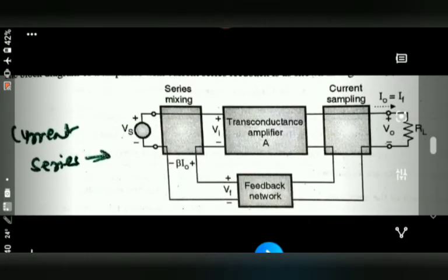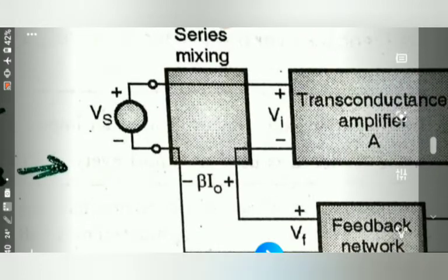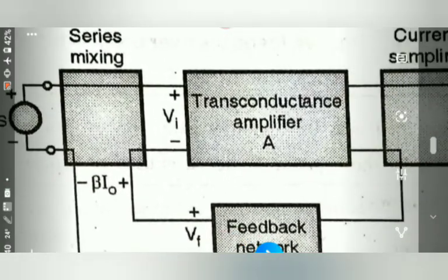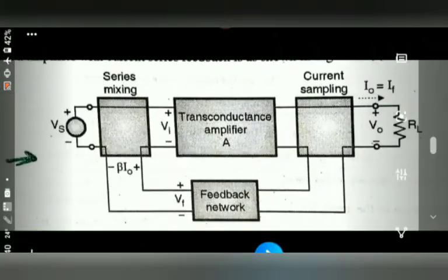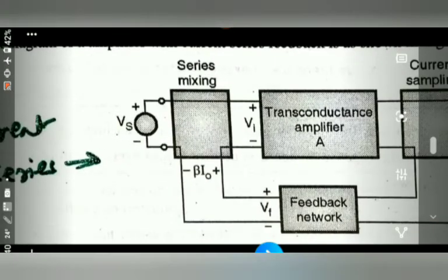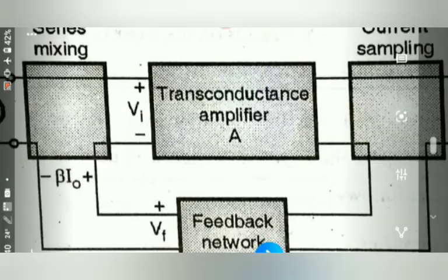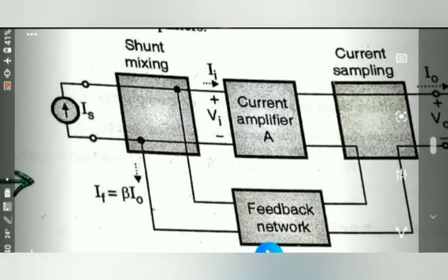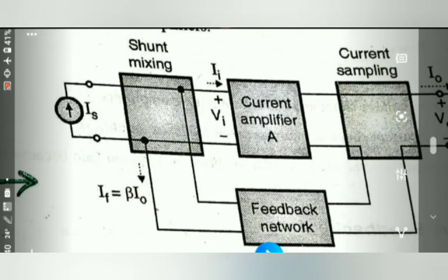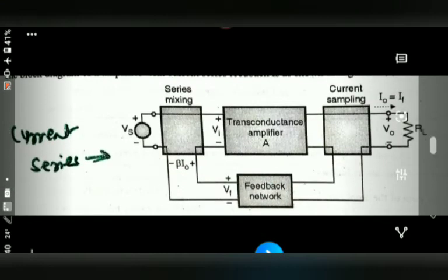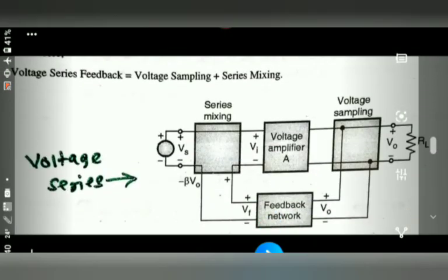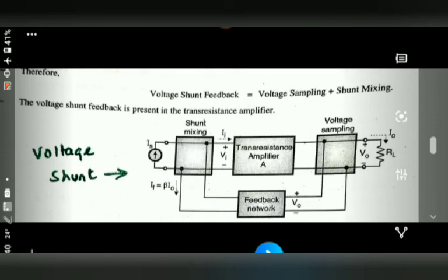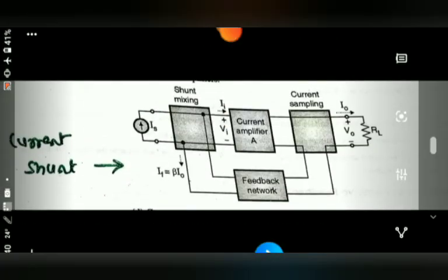Next is current series feedback. Current series has a combination where the input terminal is connected in series and the output samples current — this is called current series. Then current shunt feedback combines shunt mixing at the input with current sampling at the output. So the four types are: voltage series, voltage shunt, current series, and current shunt.